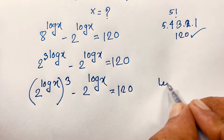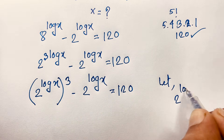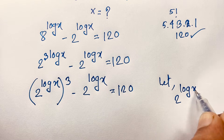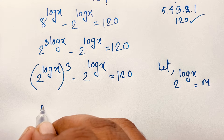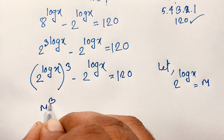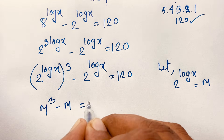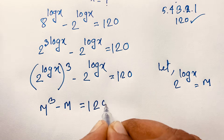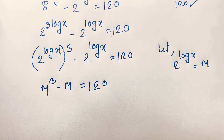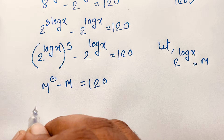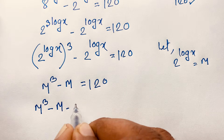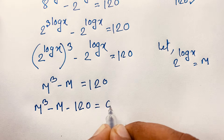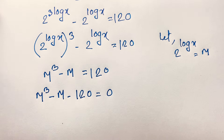We let m equal 2 to the power log x, so we substitute. Now the equation becomes m to the power 3 minus m is equal to 120, which gives us m cubed minus m minus 120 equals 0.